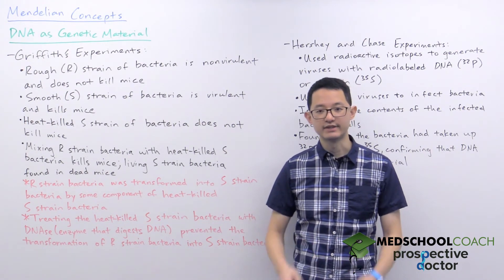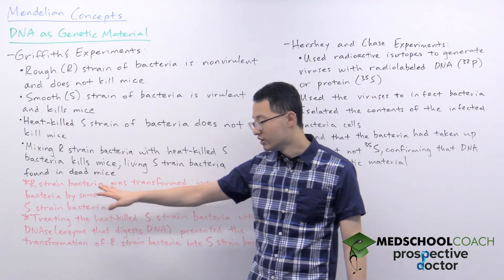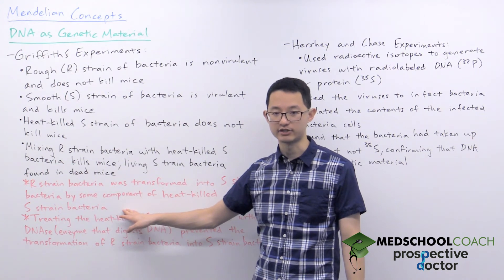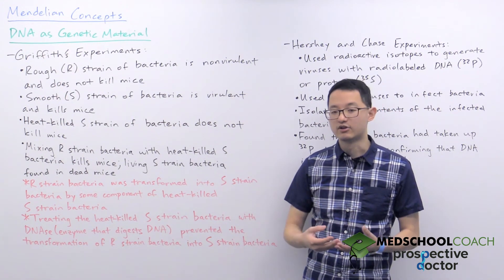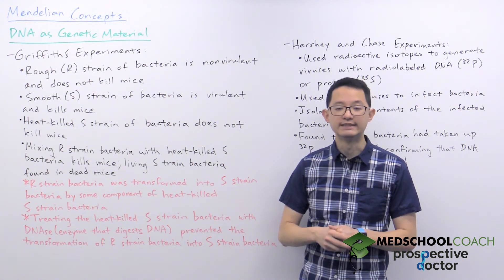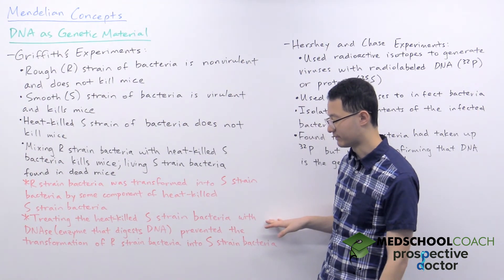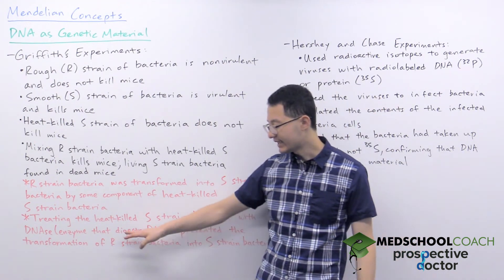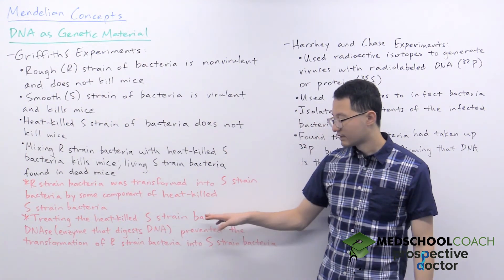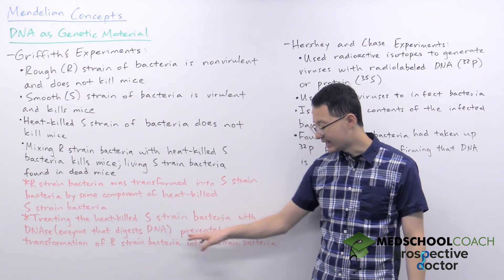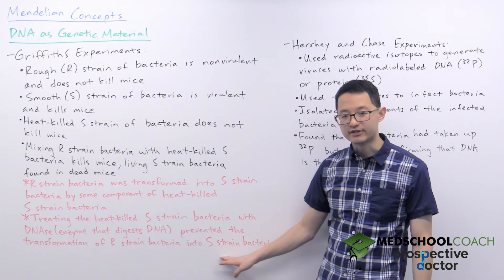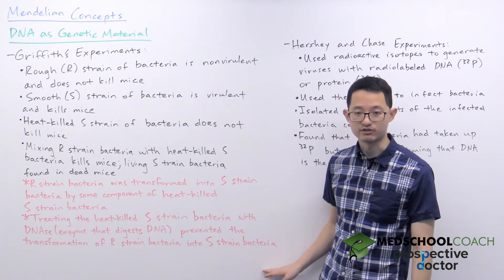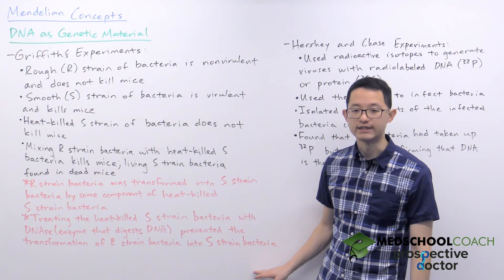So essentially from these experiments Griffiths identified that the R strain bacteria was transformed into S strain bacteria by some component of the heat-killed S strain bacteria. At the time Griffiths was not sure what this component was, but in later experiments this was determined to be DNA. In a follow-up experiment, scientists treated the heat-killed S strain bacteria with an enzyme called DNase. DNase digests and breaks down DNA. When the heat-killed S strain bacteria were treated with DNase and then mixed with R strain bacteria, the R strain bacteria was not converted into the S strain, demonstrating that DNA was necessary to convert the R strain into S strain.